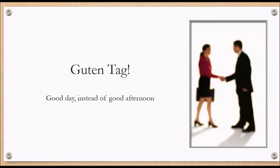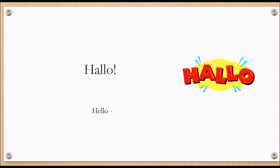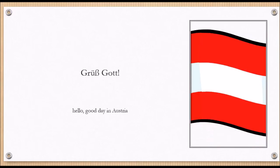In the evening you will say 'guten Abend'. More informal greetings are 'hallo', 'hi', or 'ciao' — the informal greetings always depend on where you are in Germany and what's fashionable at the time. If you go to southern Germany, Bavaria, or even Austria, you will hear 'grüß Gott', and in Switzerland you would hear 'grüßi'.